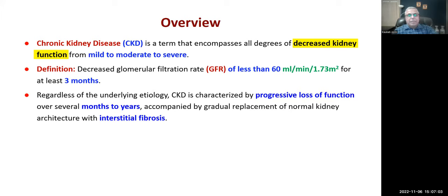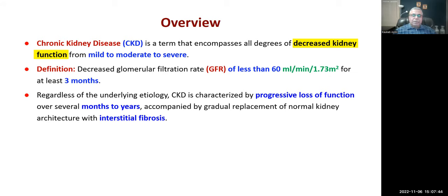Regardless of the underlying etiology, CKD is characterized by progressive loss of function over several months to years. This is different from acute kidney injury, which could develop within hours to days to weeks. In chronic kidney disease, there is a slow and progressive loss of function accompanied by gradual replacement of normal kidney architecture with interstitial fibrosis, which is irreversible.